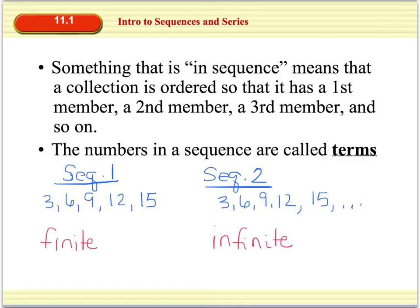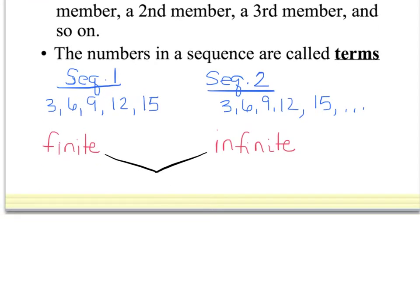Both sequences have a general rule that looks something like a sub n equals 3n. What this n means is that if I take my first term, or my a sub 1 term, whatever I plug in for n on the left, I'm going to plug in for n on the right. So a sub 1 is equal to 3 times 1. This n value, or 1 in this case, represents the nth term of the sequence, so this would equal 3.